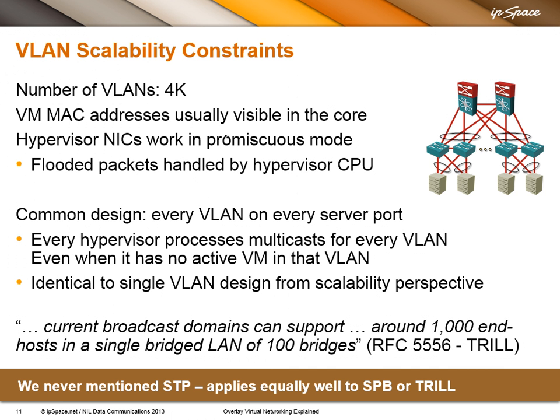If this wouldn't be bad enough, we have all sorts of scalability constraints with VLANs. The first one is obvious — we only have 4,000 VLANs. The second one, not so obvious: the MAC addresses of all the VMs you're running in your data center are usually visible throughout the layer 2 core.